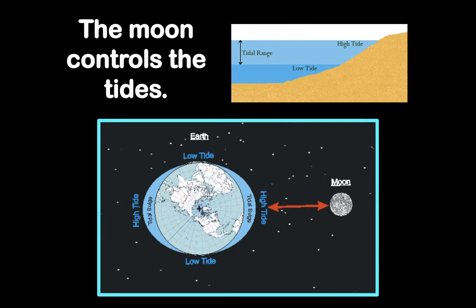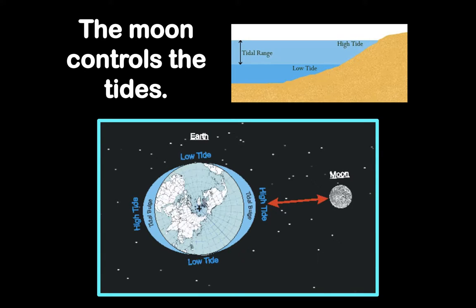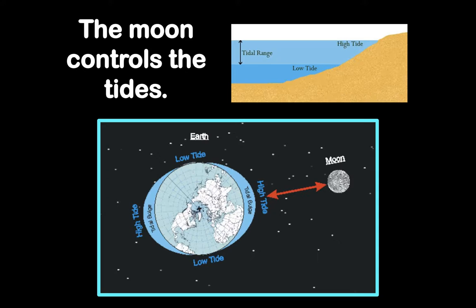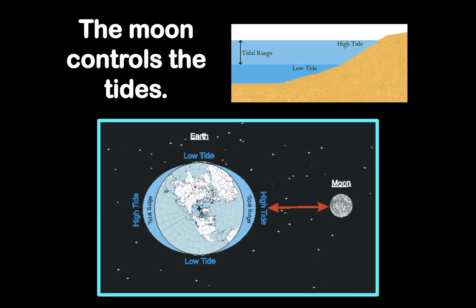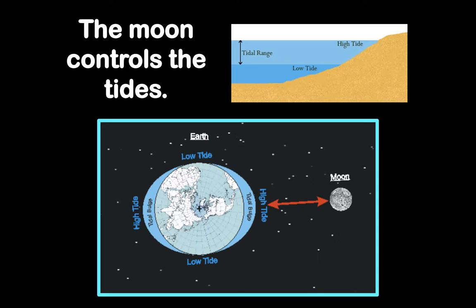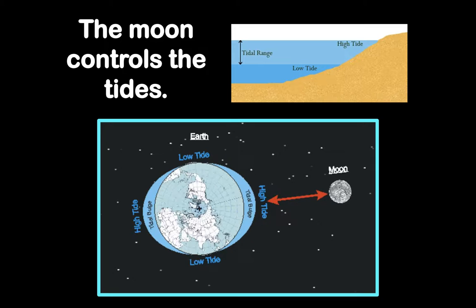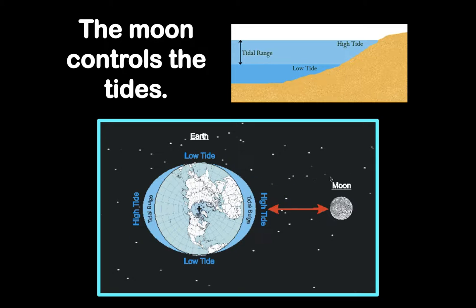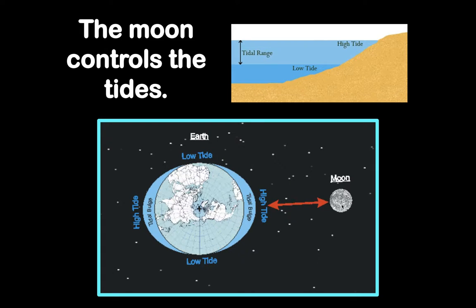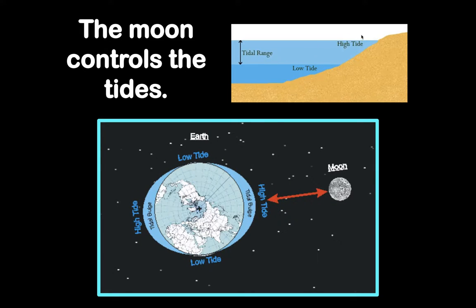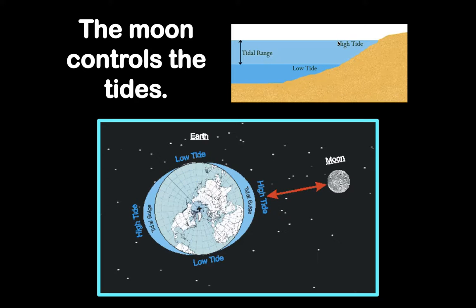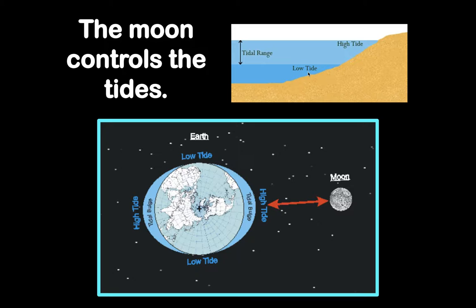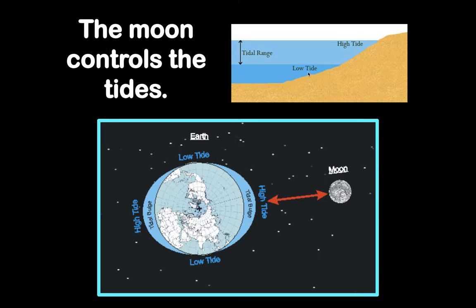Another way that the moon influences our lives is with the tide. The moon has a gravitational pull — it pulls a little bit at things on the surface of the Earth, and we can see that with water in the ocean. It pulls the water to it wherever it's at. So when the moon is overhead, the water in the ocean comes up high — we call that high tide. When the moon is not overhead, we call that low tide because it's not pulling the water up anymore.